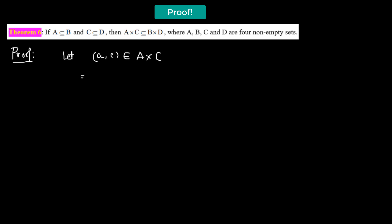This simply means that the abscissa value, which is a, belongs to set A, and the ordinate value, which is element c, belongs to our set C.